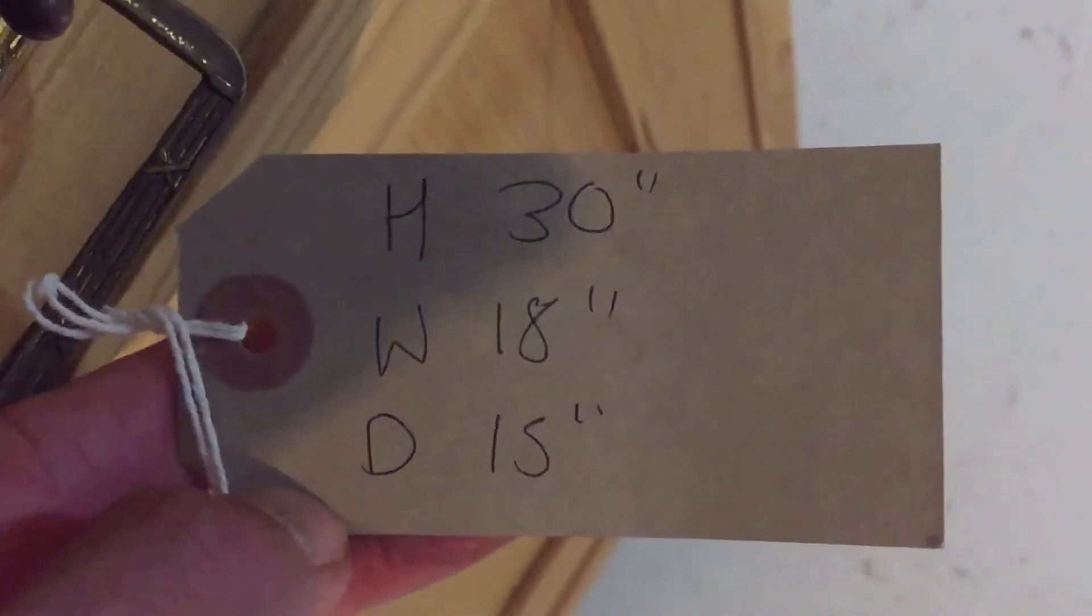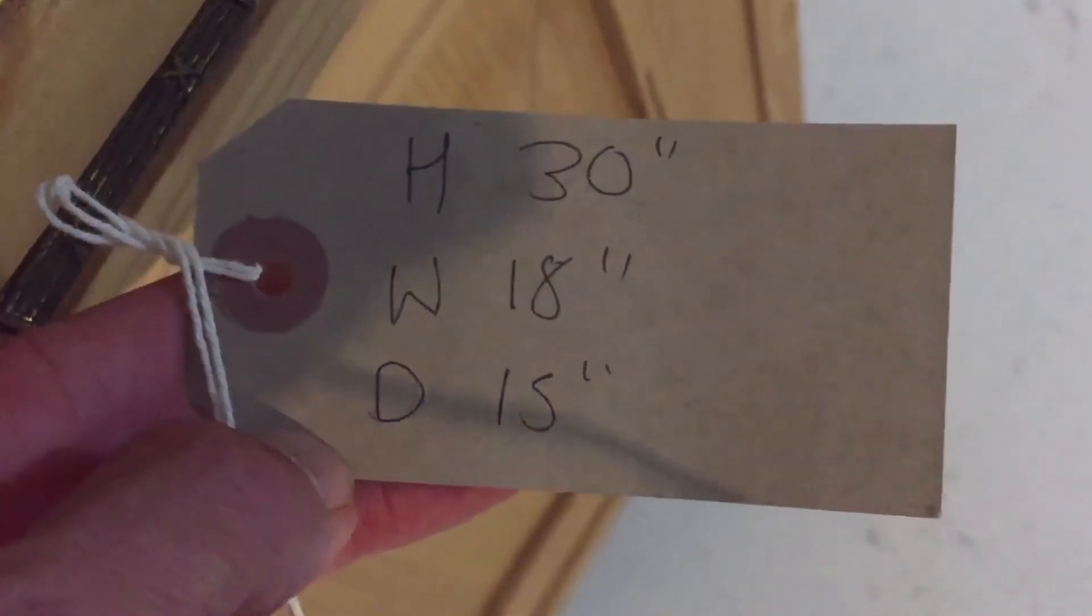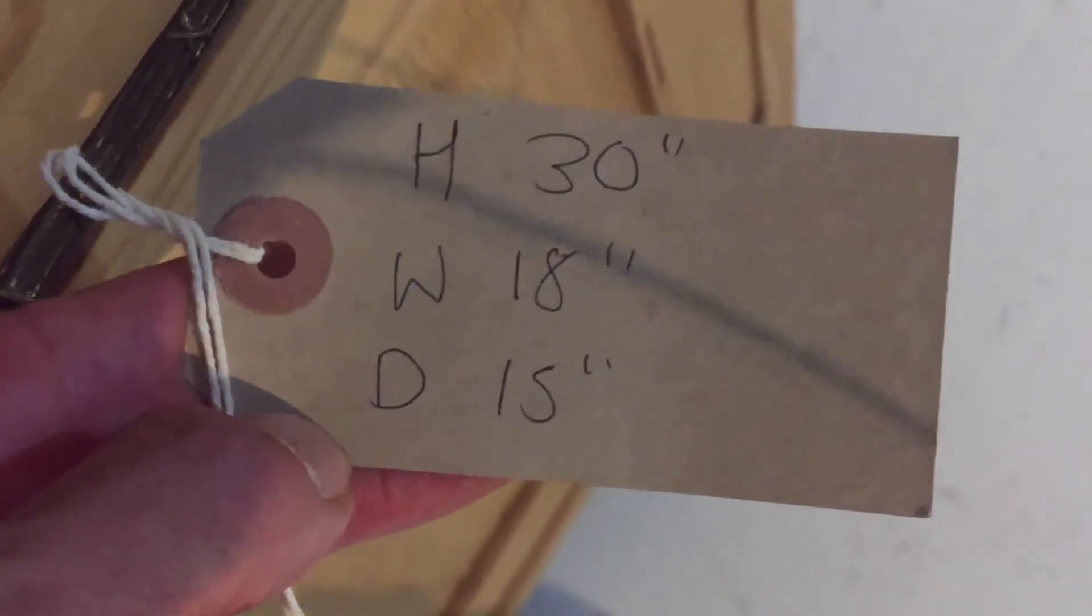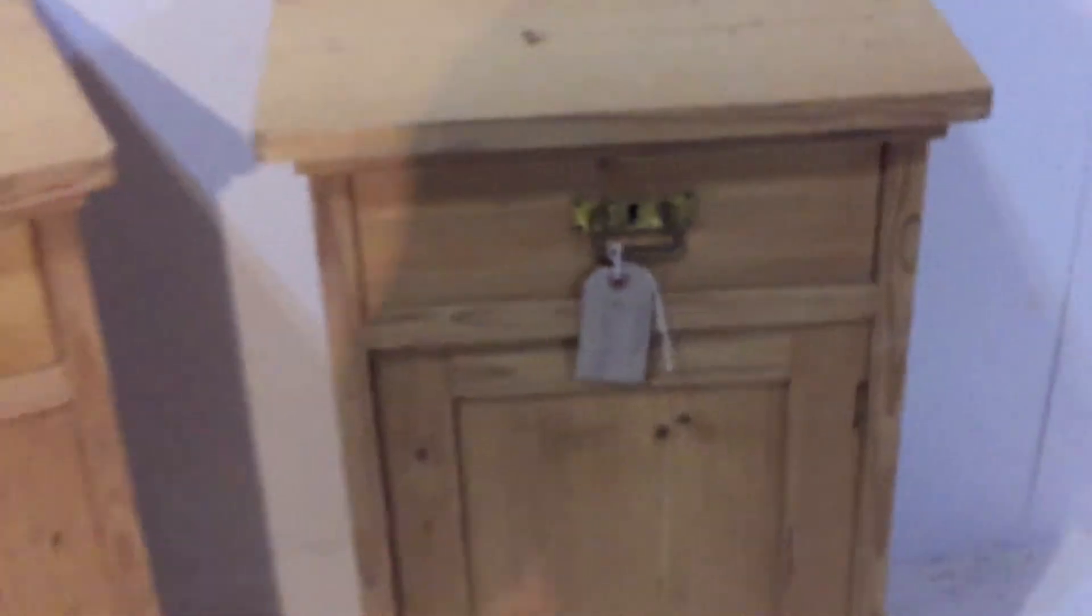The height is 30 inches on each. The width is 18, that's at the top, that's the widest point. And again at the deepest point which is at the top, 15 inches. So a nice pair of bedside cupboards.